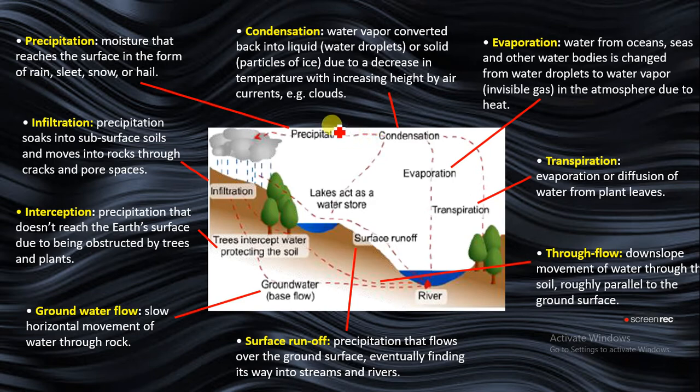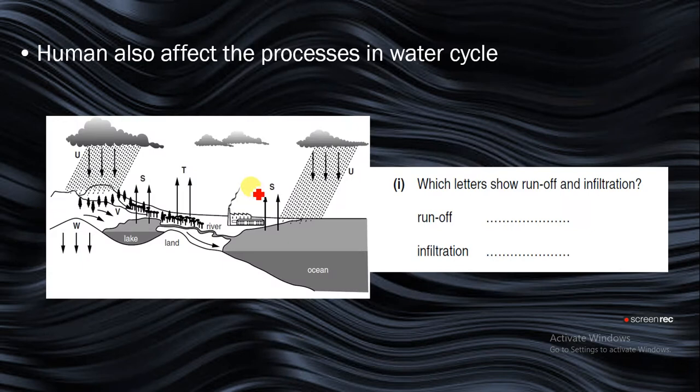Now I have a question here. This part is quite short. Humans also affect the processes in the water cycle. Which letter shows runoff and infiltration? If you look at this, R here is precipitation because water is coming to the earth surface. S is evaporation, going back to the atmosphere from oceans and lakes. T here is transpiration because water is leaving trees back to the atmosphere.